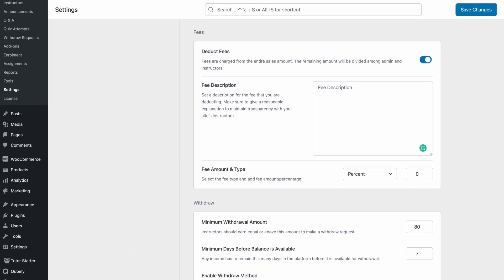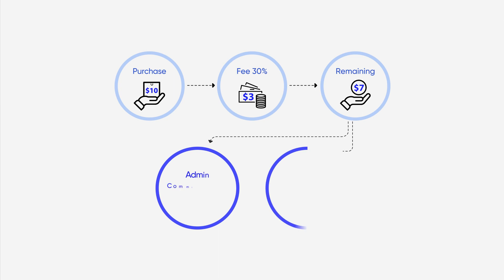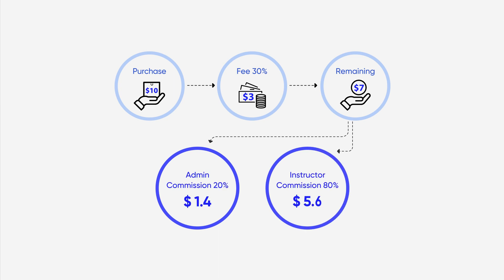Before we move on, just to explain this a little better, let's quickly go over how all this works. Let's say a purchase of $10 is made on your site. If you had set a fee percentage of 30%, then $3 would be deducted from that. And from the remaining $7 revenue, the admin and the instructor will receive their cut according to the sharing percentage that we had set earlier.